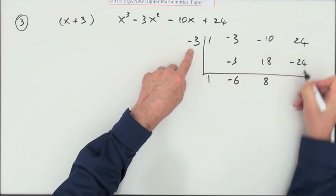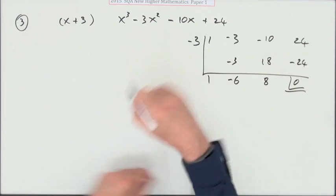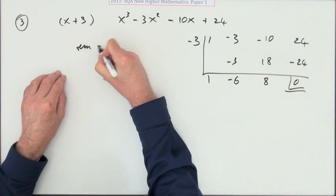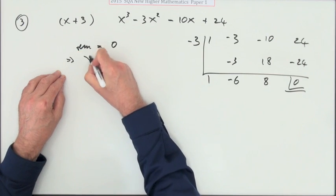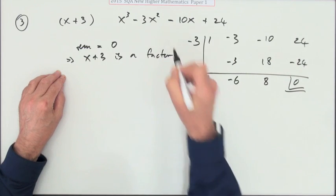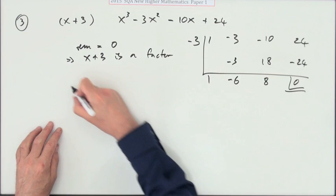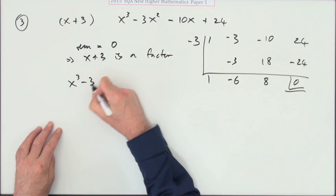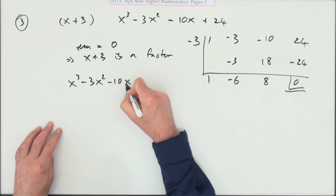And that comes to 0. Then you put your statement: the remainder is 0, which means that x plus 3 is a factor. Factorize it fully: well, x cubed minus 3x squared minus 10x plus 24.